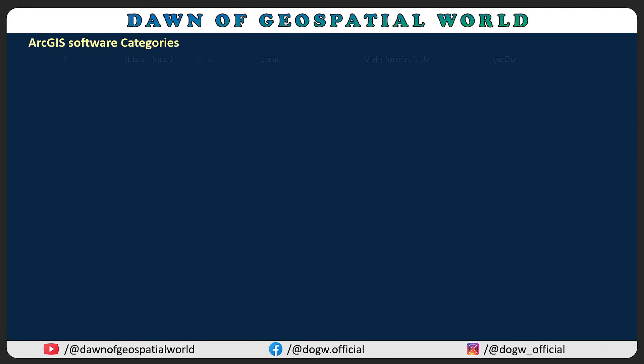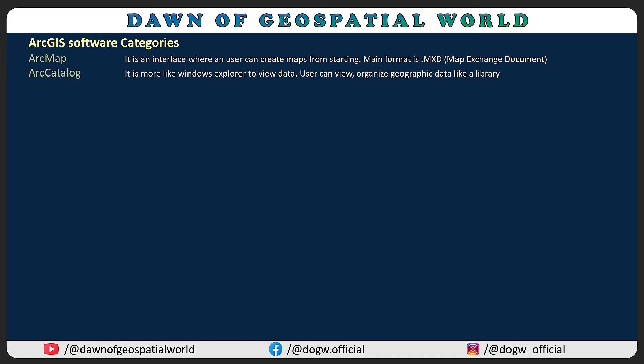ArcMap is an interface where a user can create maps from scratch. The main format is MXT, i.e. Map Exchange Document. Arc Catalog is more like Windows Explorer to view data, where users can view organized geographic data like a library.